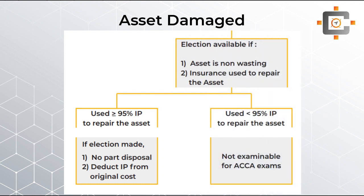If you don't want to pay CGT on the part disposal from a damaged asset, an election is available — provided the asset is a non-wasting asset and the insurance proceeds are almost fully used to repair the asset. If more than 95% of the insurance proceeds are used for repairs, no part disposal arises and no CGT is due. Instead, the insurance proceeds received are deducted from the original cost, giving a deferment. The right-hand side item on screen is not examinable.